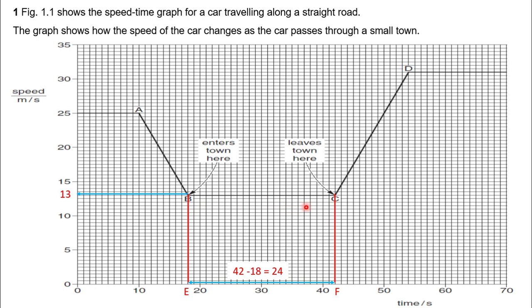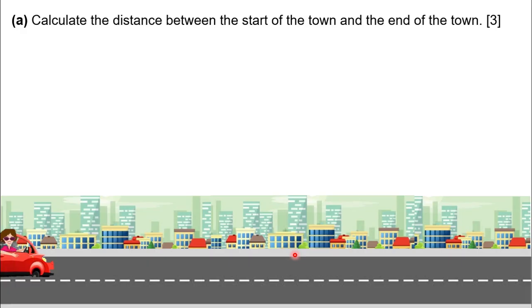Here, the rectangle length is BC and it is 24 seconds, and width is 13 meters per second. So multiplying these two, we can find the distance as 312 meters.